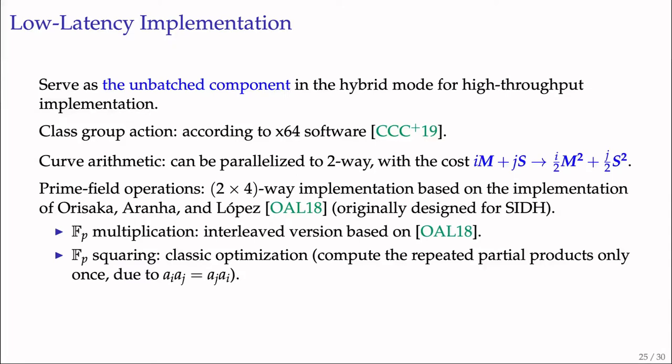For the low-latency implementation, it can also serve as an unbatched component in hybrid mode for high-throughput implementation. The class group action layer is the same as OAYT-style. The curve arithmetic can be easily parallelized to two-way, and the number of needed two-way multiplications and squarings is half the number of original one-way operations.